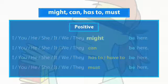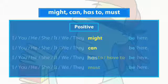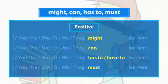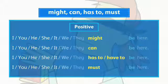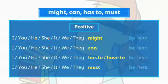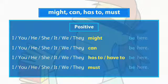'Might', 'can', 'has to', 'have to', and 'must' are all modal verbs. They are the same for all subjects. They are followed by the base form of the verb.